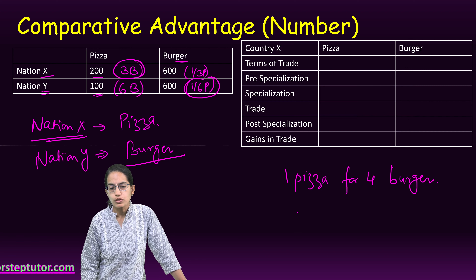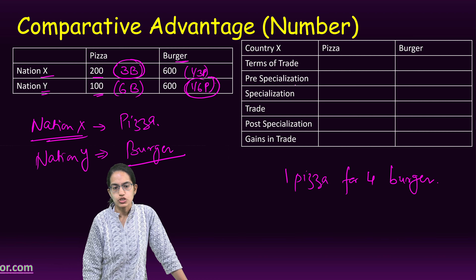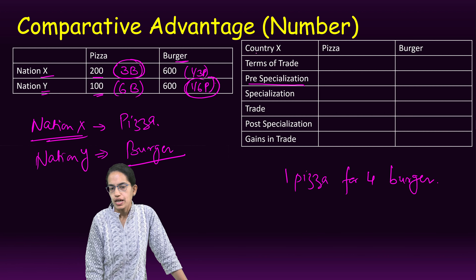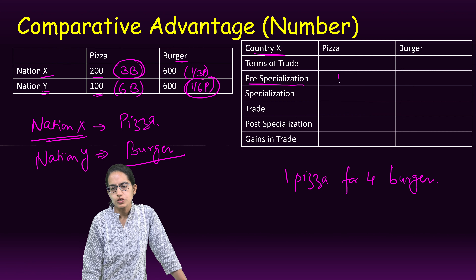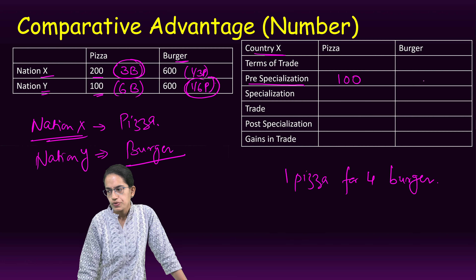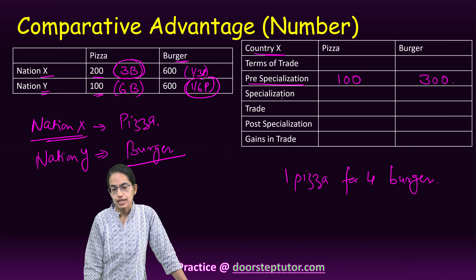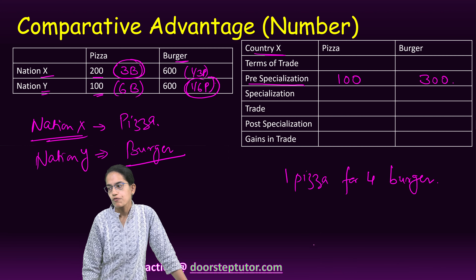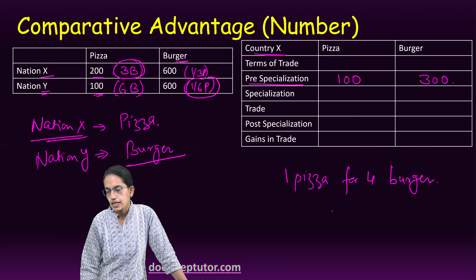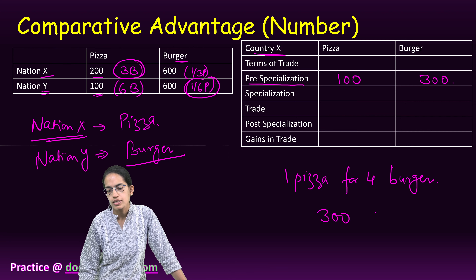Now the third part is a very important part of the question — understand this very carefully. If the trade settles at an idea of 1 pizza for 4 burgers, understand this carefully.